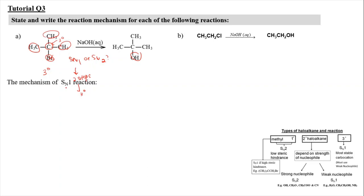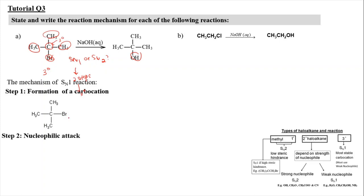The mechanism is SN1 reaction with two steps: step one is formation of the carbocation, and step two is the nucleophilic attack. For formation of the carbocation, we draw the structure again and remove the Br — the C-Br bond is broken and two electrons are transferred into bromine. This causes the carbocation to form in a slow reaction, producing a carbocation and Br⁻.